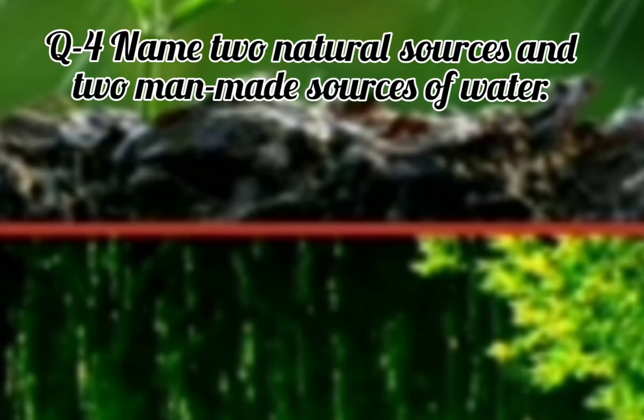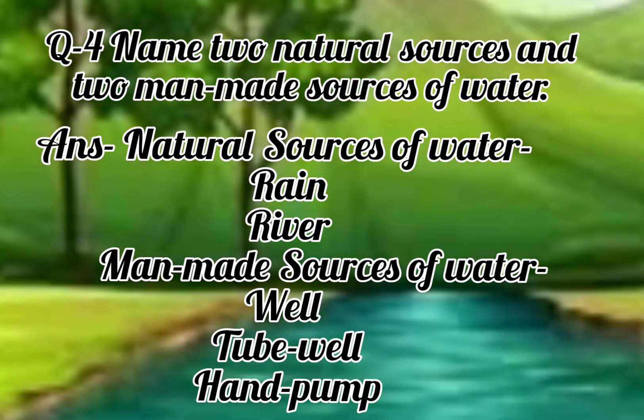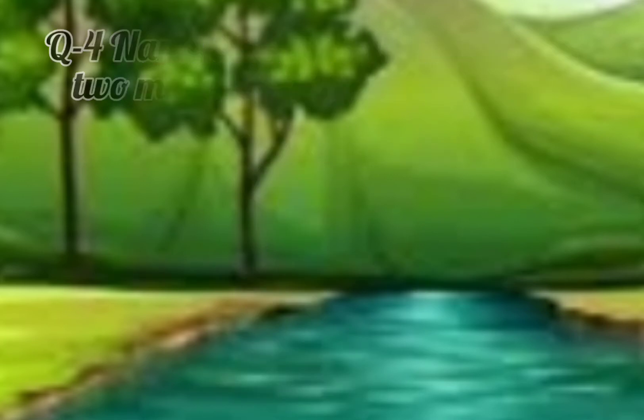Question number 4. Name two natural sources and two man-made sources of water. Natural sources of water are river and rain — you can write any other sources. Man-made sources of water: wells, tube wells, hand pump — you can write your choice.